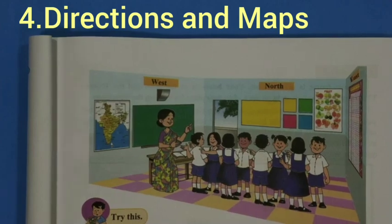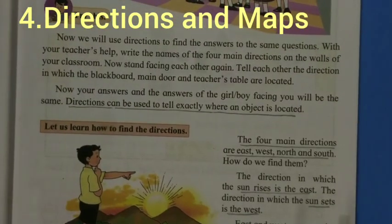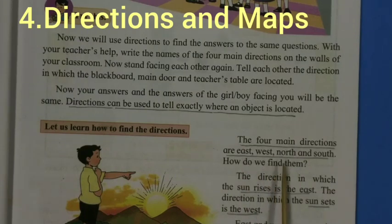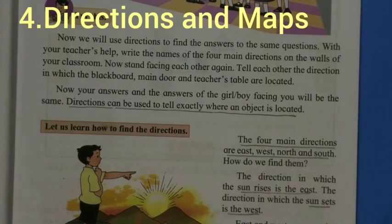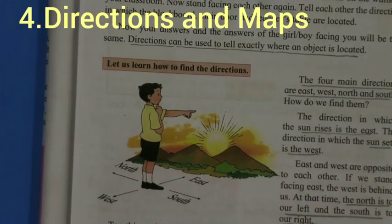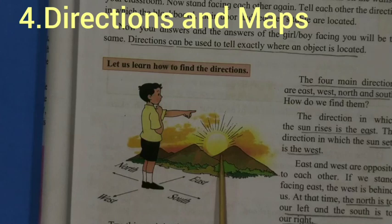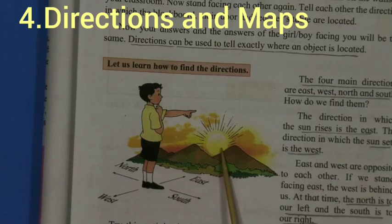Today we are going to learn about directions. We have four main directions: east, west, north, and south. There is an interesting thing — how did people name the directions? In nature, one thing always rises from the same place: the sun. The direction in which the sun rises is called the east.